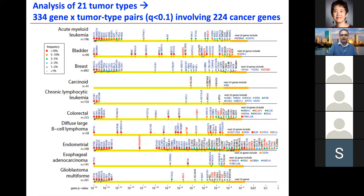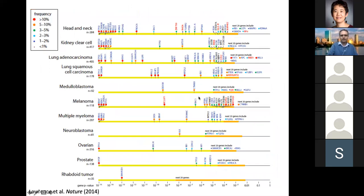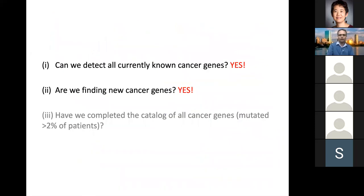When we applied this across different tumor types, we find cancer genes — the blue ones were previously known cancer genes, and the red ones are novel ones detected using our algorithm. Running across all these different tumor types, we found cancer genes and novel ones, essentially found all previously known cancer genes in these tumor types, and added 33 new ones.